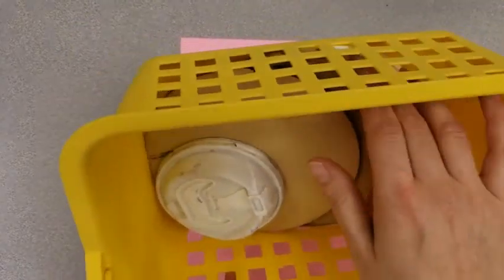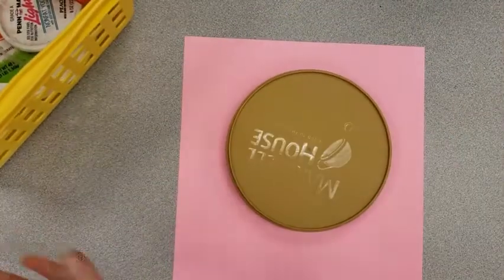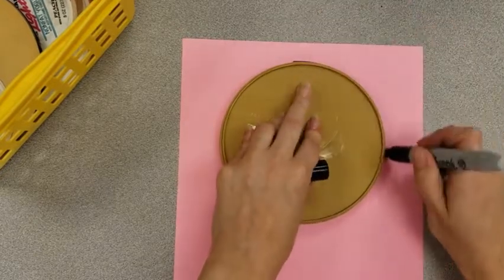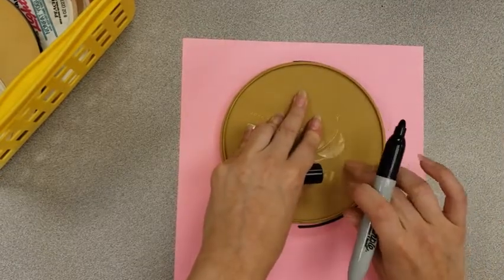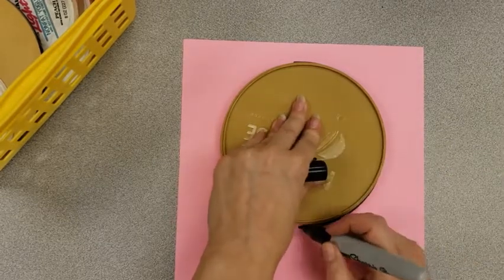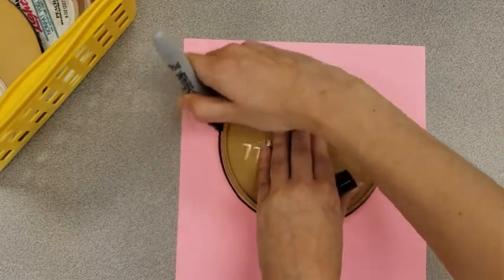Now what we're going to do is you are going to choose any size circle and we're going to trace it on our paper. When I trace I hold my thing down with one hand and then I use my pencil to trace right up next to the edge of whatever I am using as a tracer.